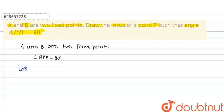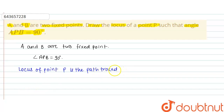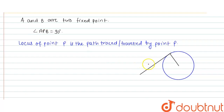So we can write: locus of point P is the path traced — or path traveled — by point P.